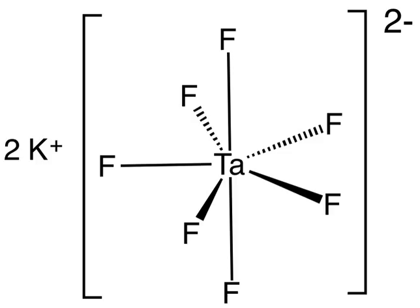Alpha-K2TaF7 is the most common form and crystallizes in the monoclinic P21/c space group. The structure is composed of TaF7^2- units interconnected by potassium ions. TaF7^2- polyhedra may be described as monocapped trigonal prisms with the capping atom located on one of the rectangular faces. Potassium atoms are 9-coordinated and may be viewed as distorted monocapped square prisms.